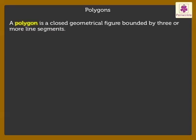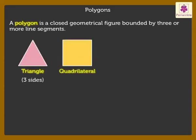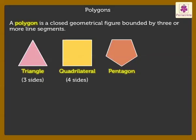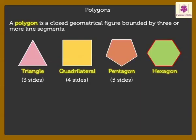Now let us look at some of the polygons. A triangle is a three-sided polygon. A quadrilateral is a four-sided polygon. A pentagon has five sides. A hexagon has six sides.